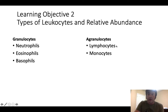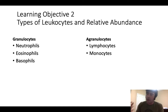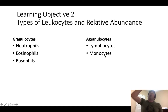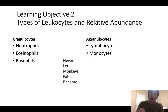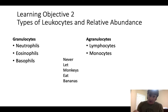Agranulocytes, on the other hand, don't have readily observed granules under a light microscope. Notice their suffix is -cyte, so we have lymphocytes and monocytes. The mnemonic for remembering their abundance from most to least is: Never Let Monkeys Eat Bananas — neutrophils, lymphocytes, monocytes, eosinophils, basophils.